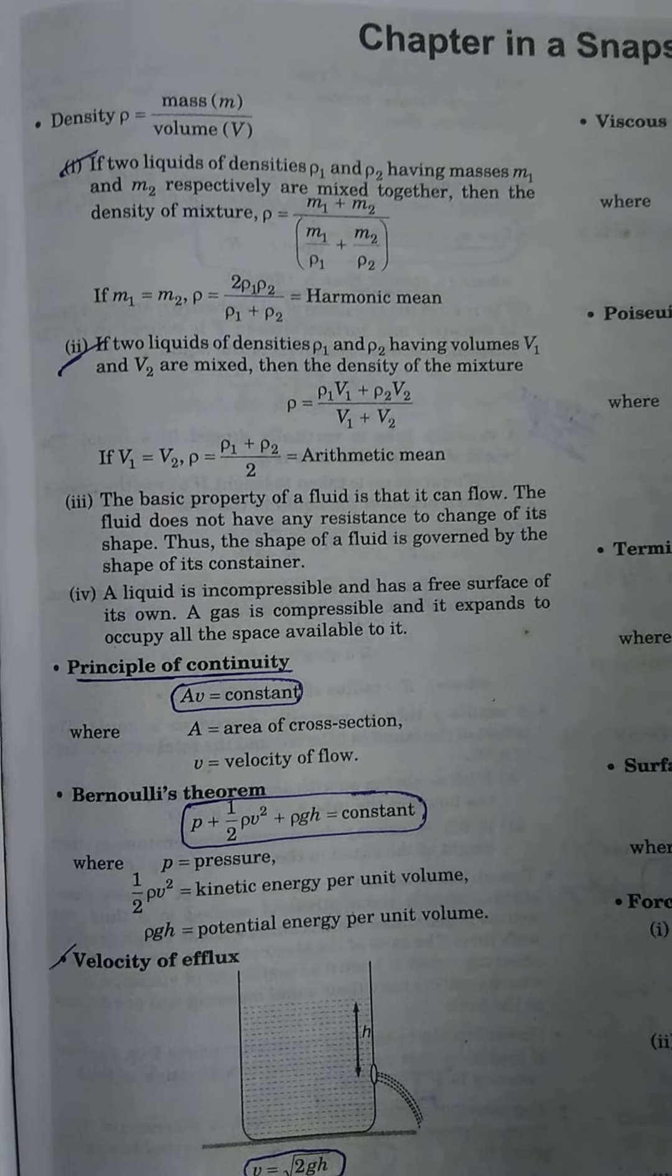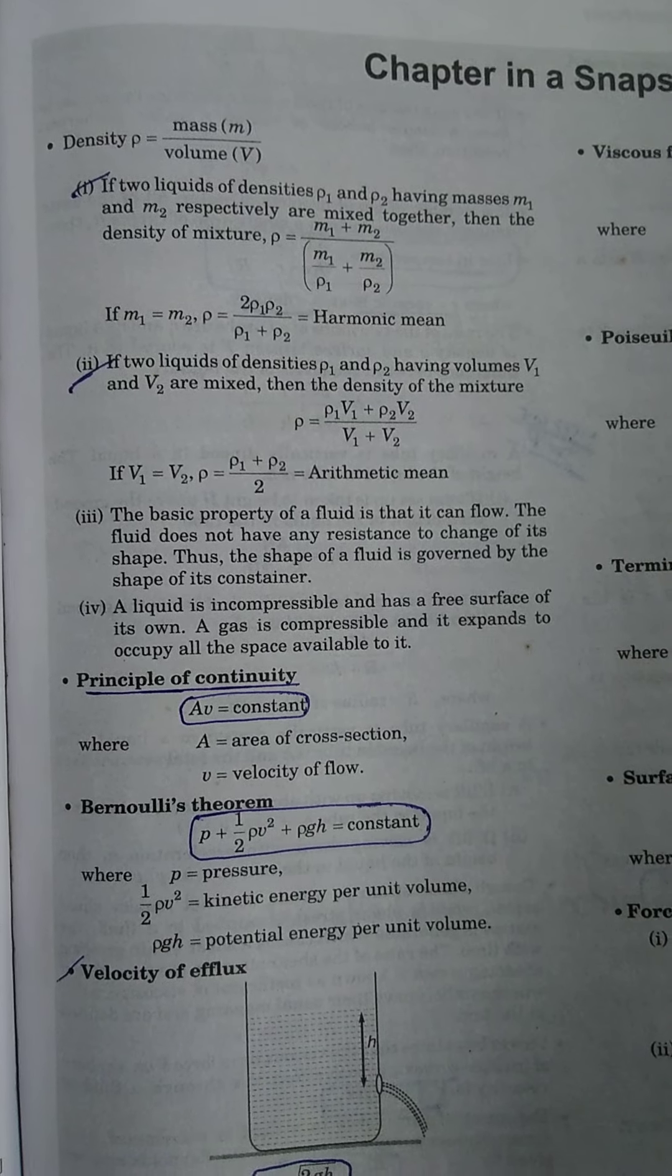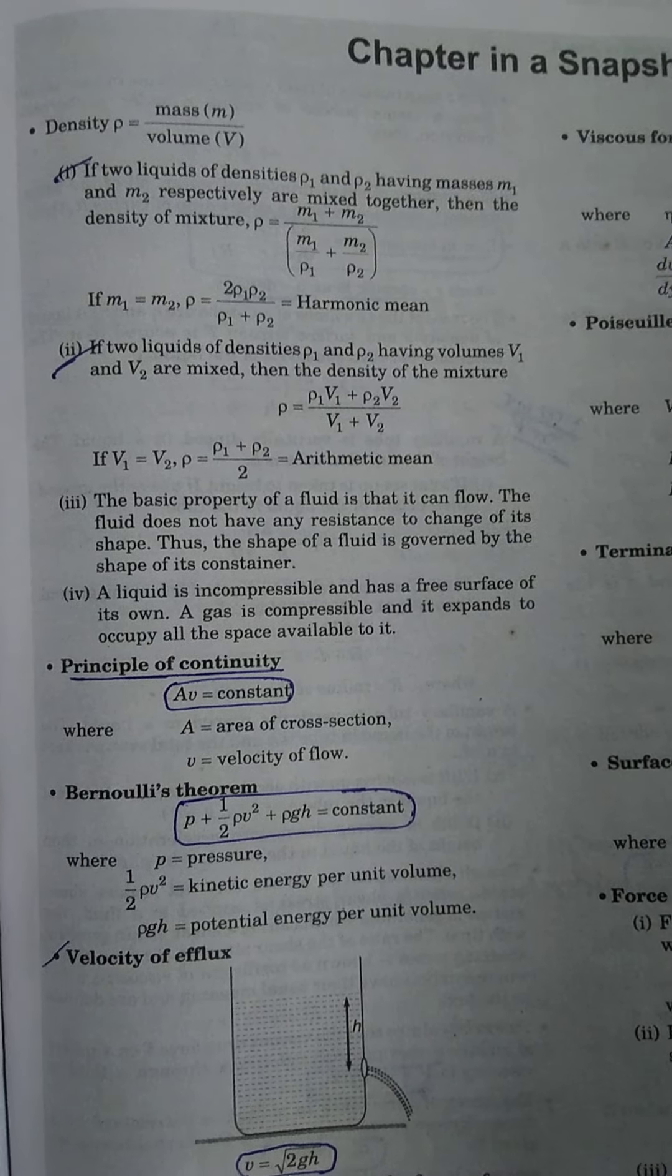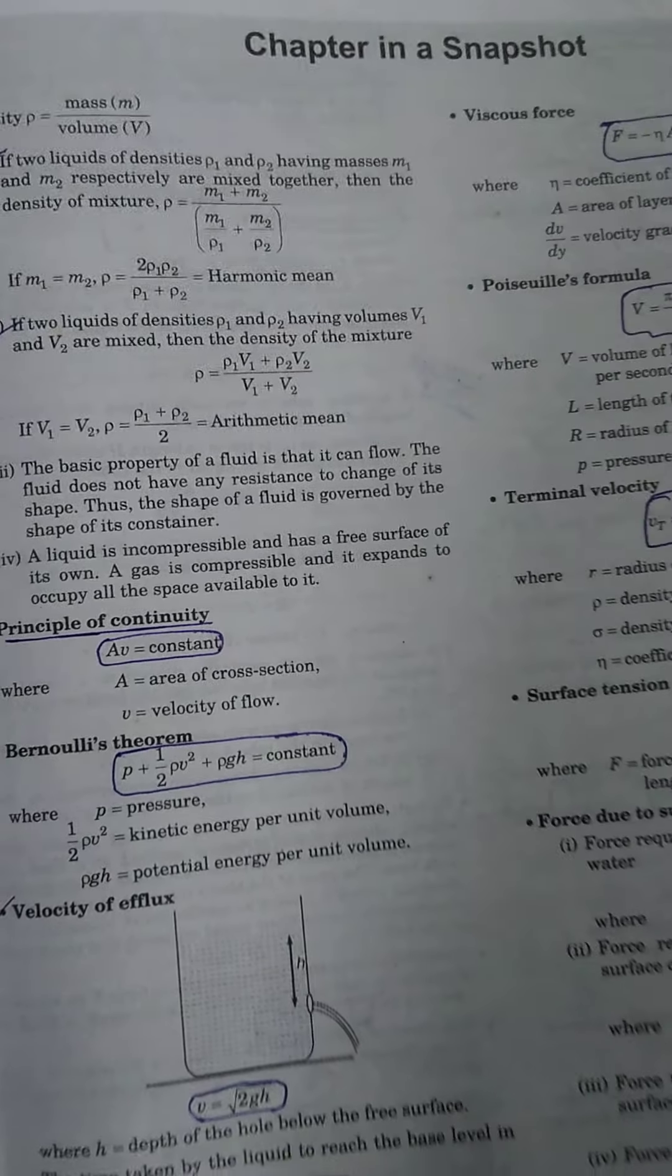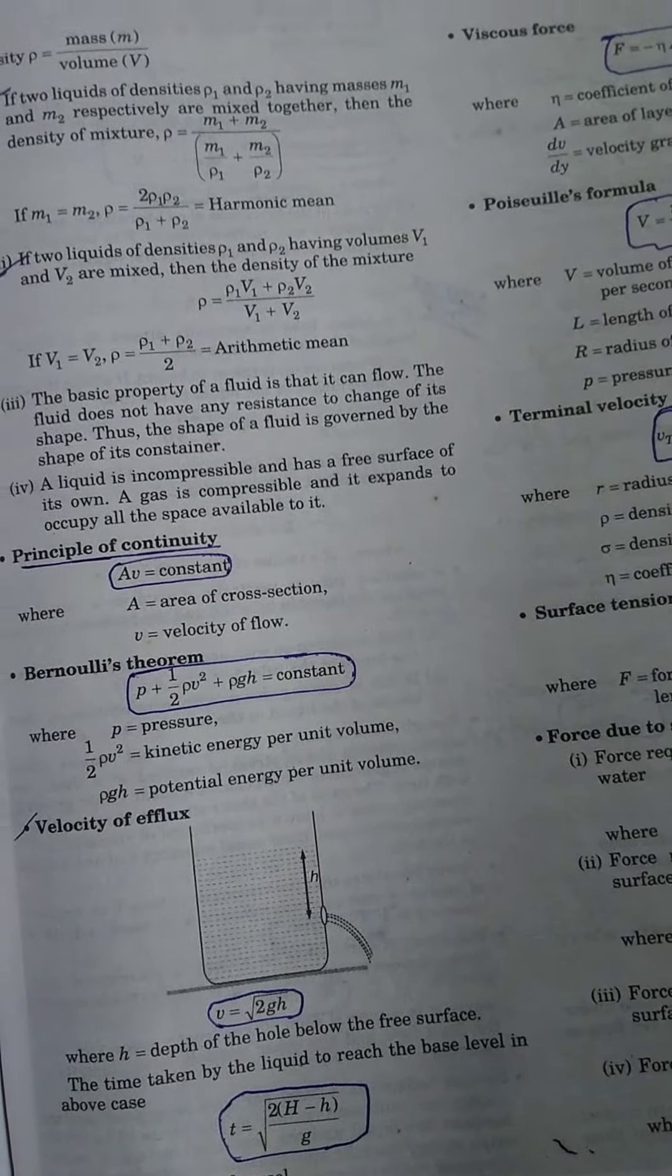Density equals mass upon volume. If ρ is the density, ρ1 and ρ2 are the densities of two masses m1 and m2, then the density of mixture ρ is equal to m1 + m2 upon 1/ρ1 + 1/ρ2.